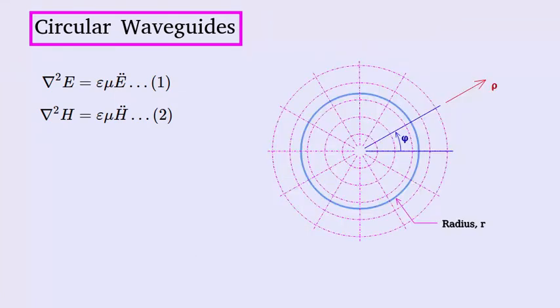And here's a cross-sectional view of the waveguide showing the polar coordinates that we're using for the cross section. The variables we're using are phi for the angle and rho for the distance from the center, called the radial distance.